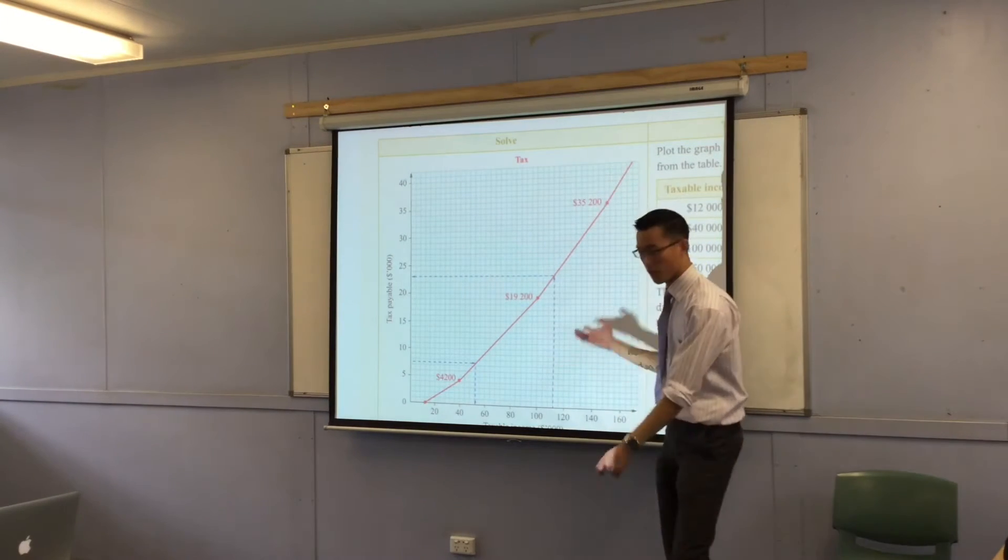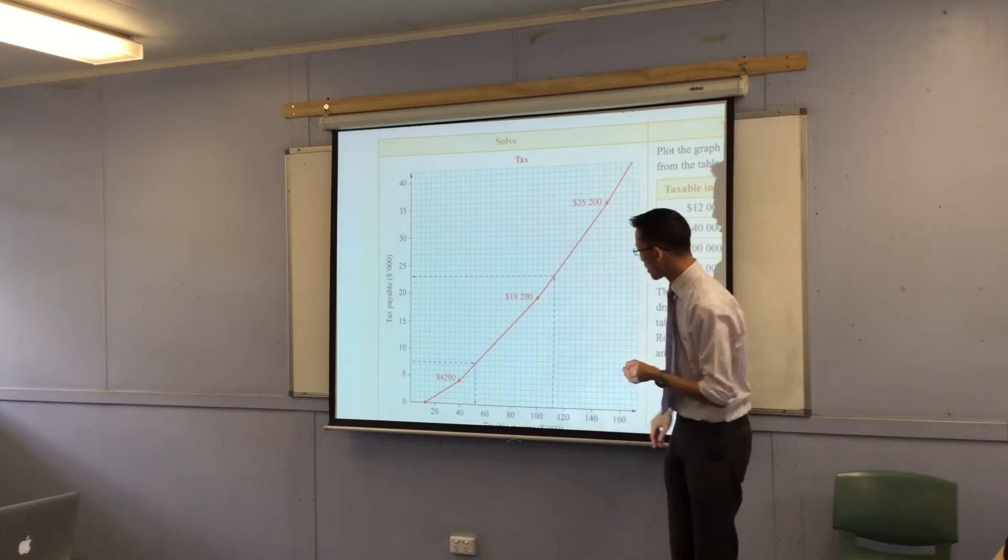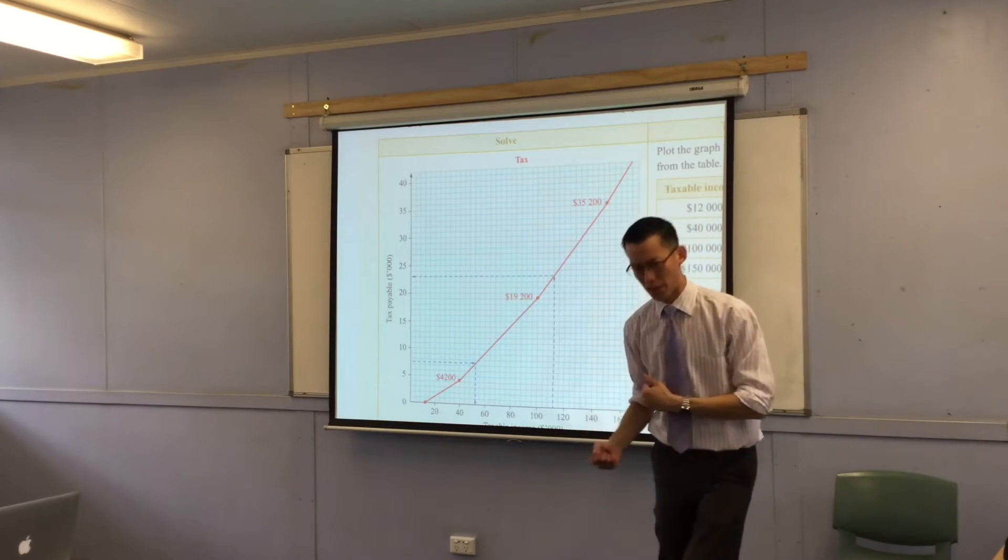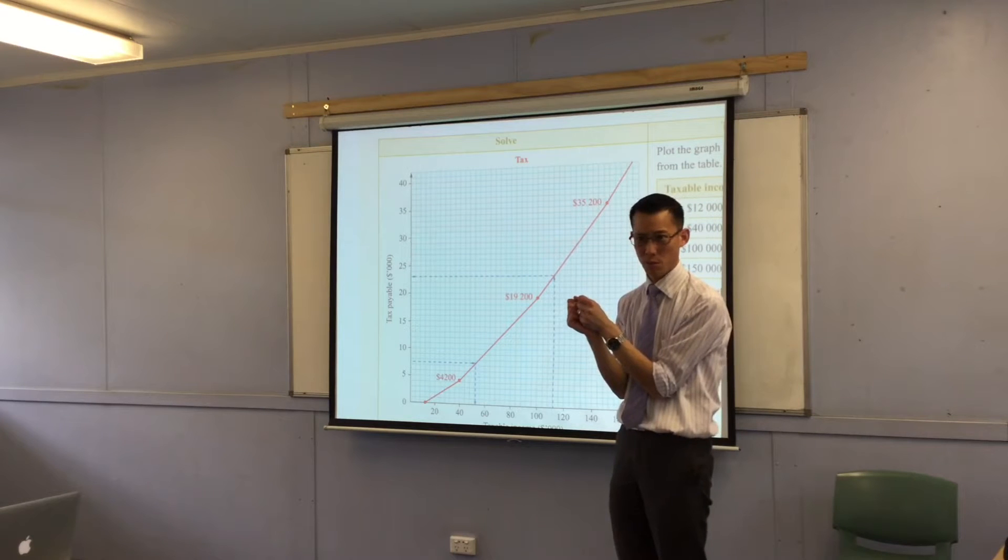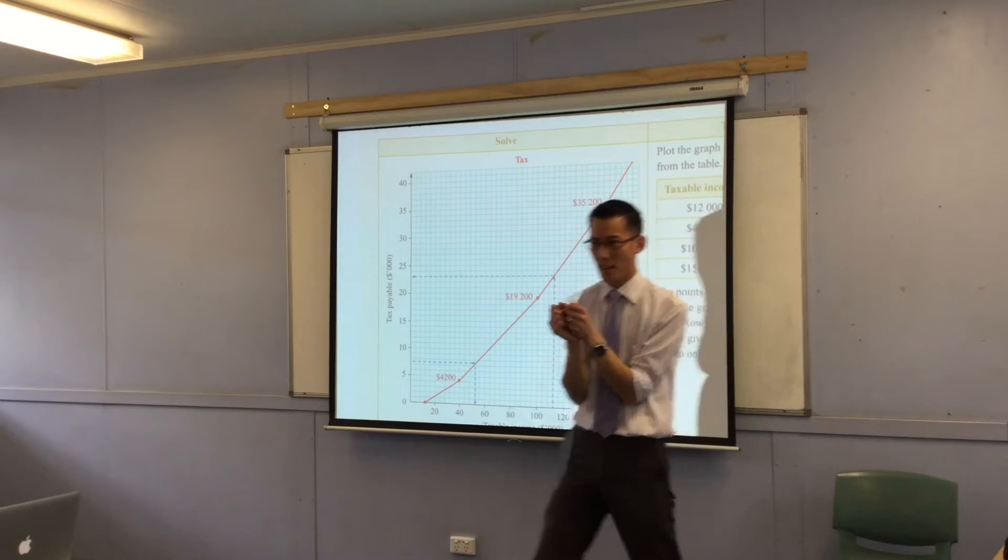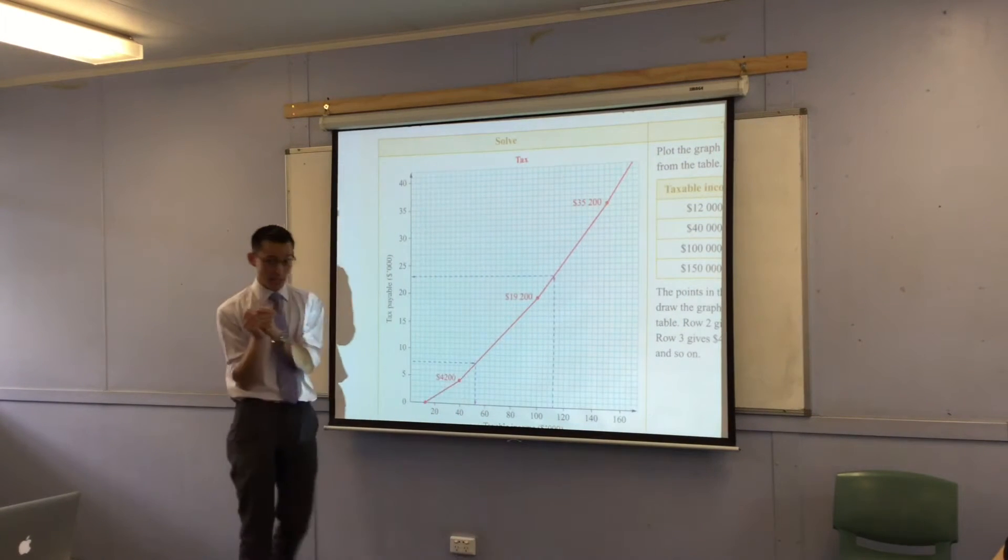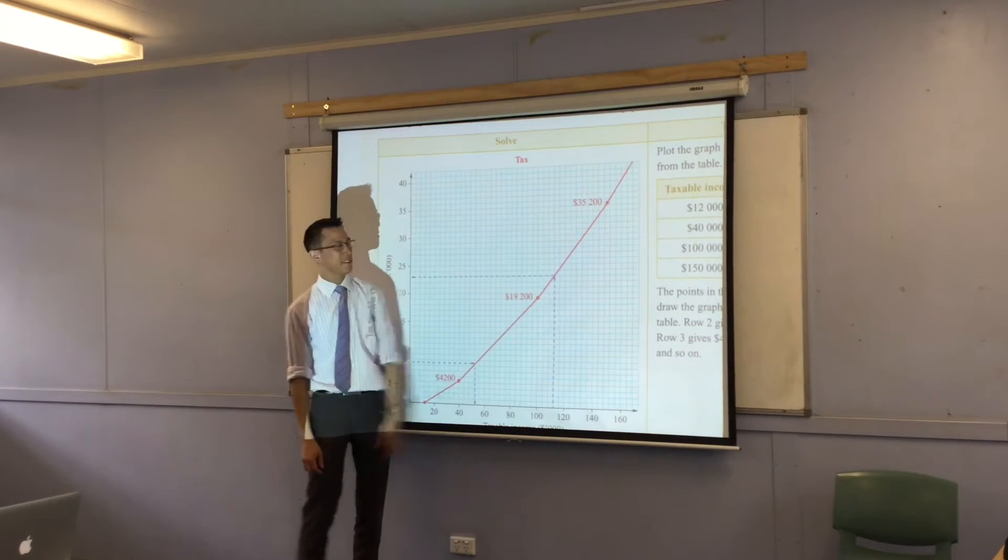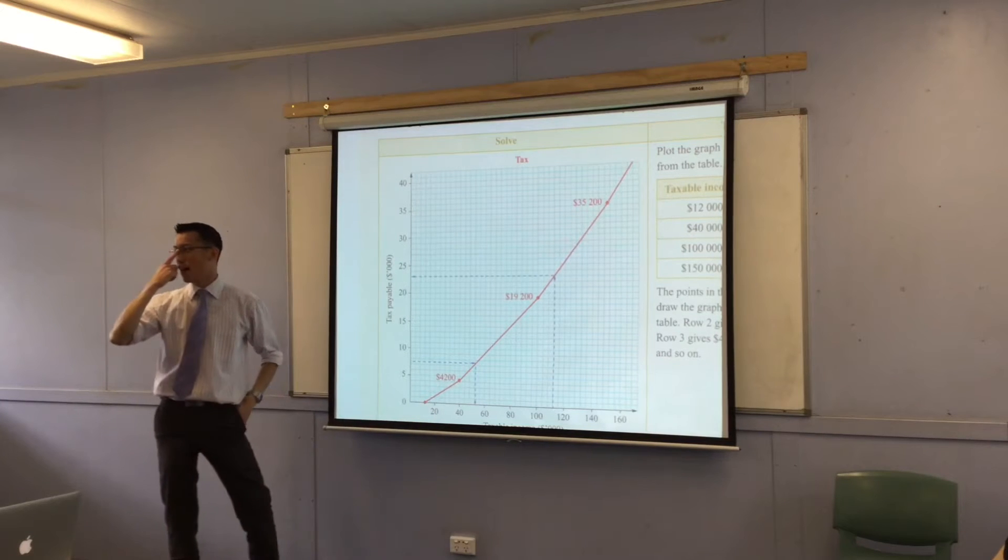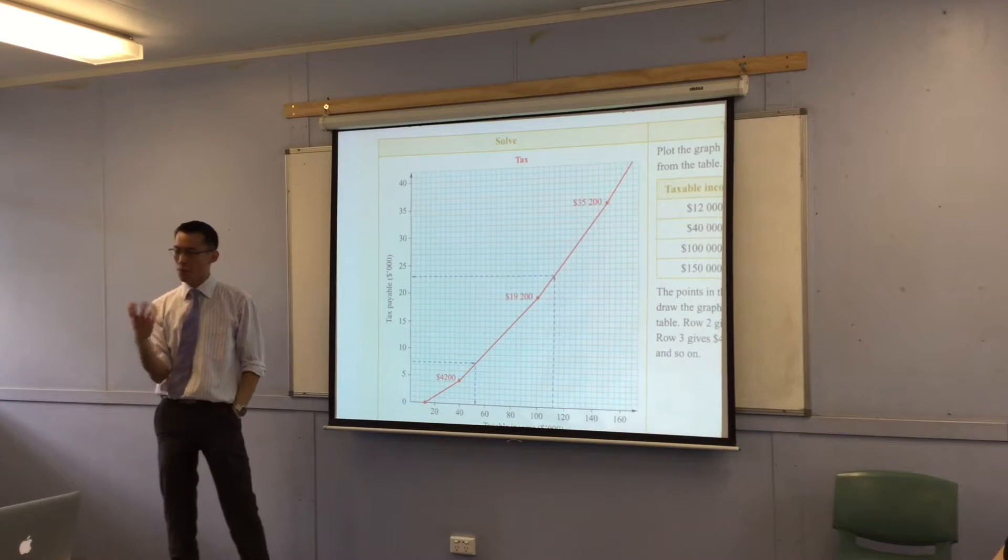Now I want to point out some features to you of this. Number one, this graph is actually a bunch of graphs sewn together. We have a name for this, it starts with a P, does anyone remember? We call this a piecewise graph because it's a graph and it's in several pieces. I hope that rings a bell. Piecewise or piecemeal.